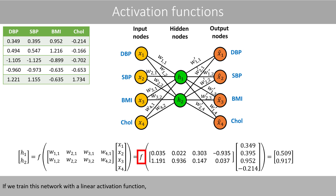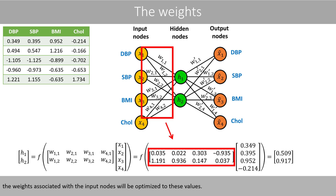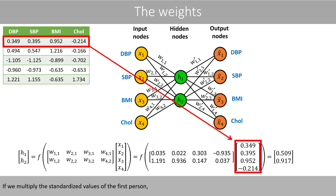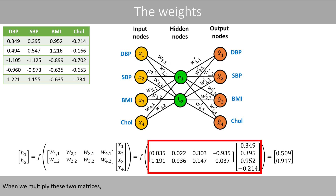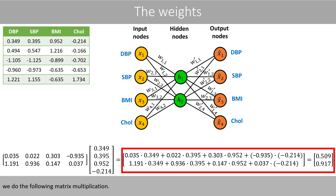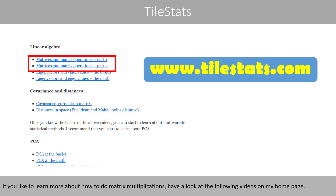If we train this network with a linear activation function, the weights associated with input nodes will be optimized to these values. If we multiply the standardized values of the first person by these weights, we will get the values in the two hidden nodes. When we multiply these two matrices, we do the following matrix multiplication. If you like to learn more about how to do matrix multiplications, have a look at the following videos on my homepage.